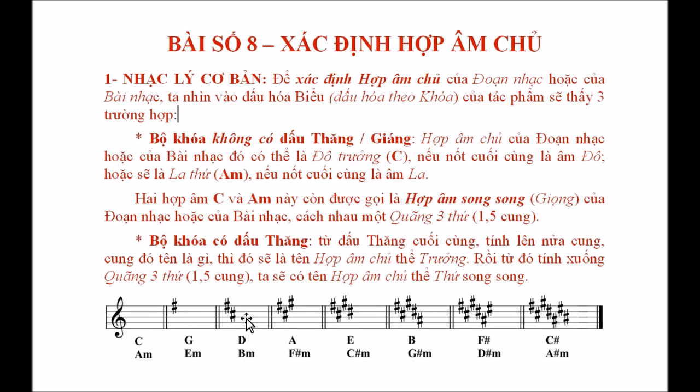Còn nếu tác phẩm có hai dấu thăng, thì dấu thăng cuối cùng là đô, tính lên nửa cung thành rê. Vậy nếu nốt cuối cùng của đoạn nhạc hay tác phẩm là rê, thì đây sẽ là bài giọng rê trưởng. Hoặc nếu kết thúc ở nốt si, sẽ là giọng si thứ.